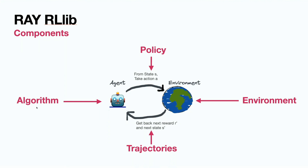Then there are algorithms, and Ray RLlib has a rich library of built-in algorithms. So you will not have to implement PPO, DQN, DDPG, A3C — none of these algorithms. You will just use them as a plugin and implement a configuration for each algorithm. Keep in mind that environment is an API class, an algorithm is an API class, and a policy is another API class.